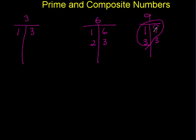Now there's two numbers that are unique to the counting numbers. And the first number is 1. 1 is neither prime nor composite.